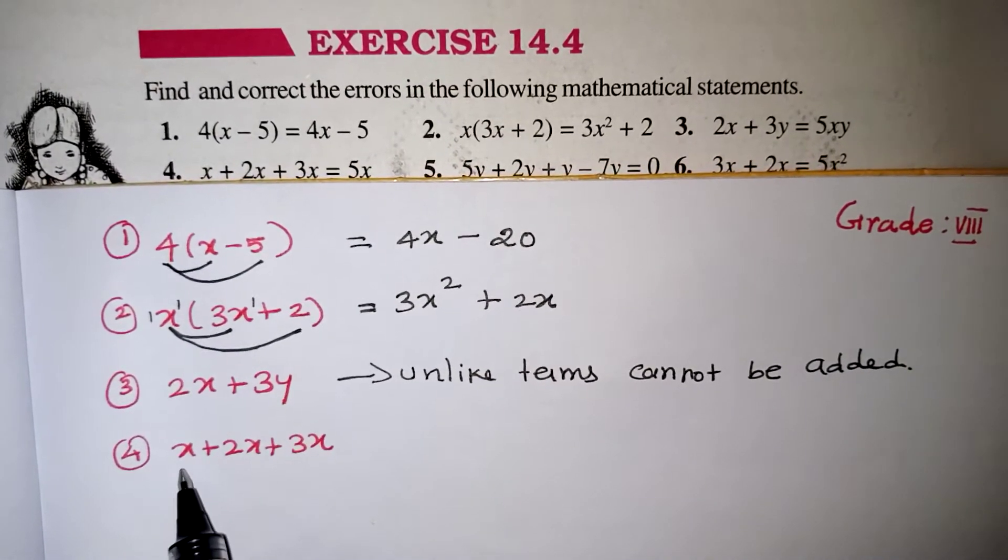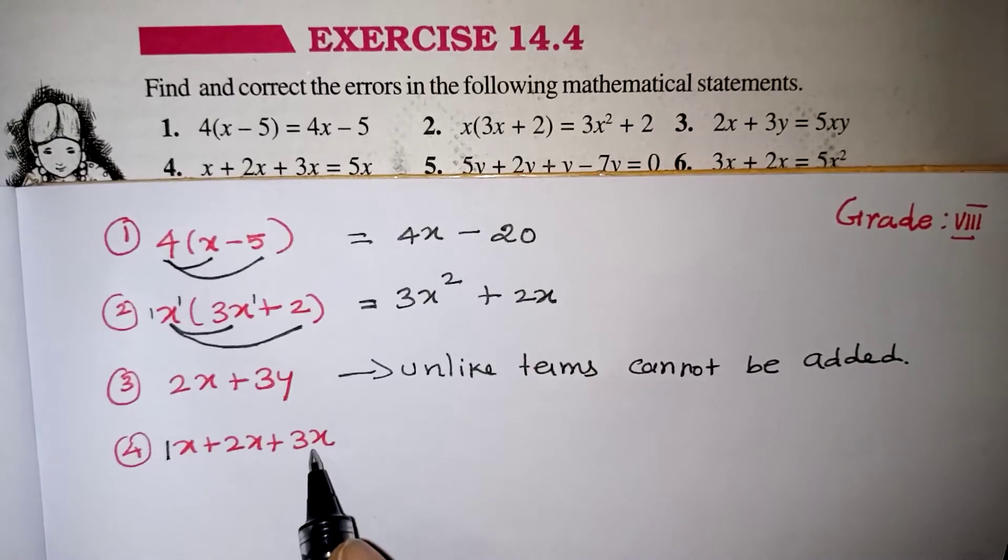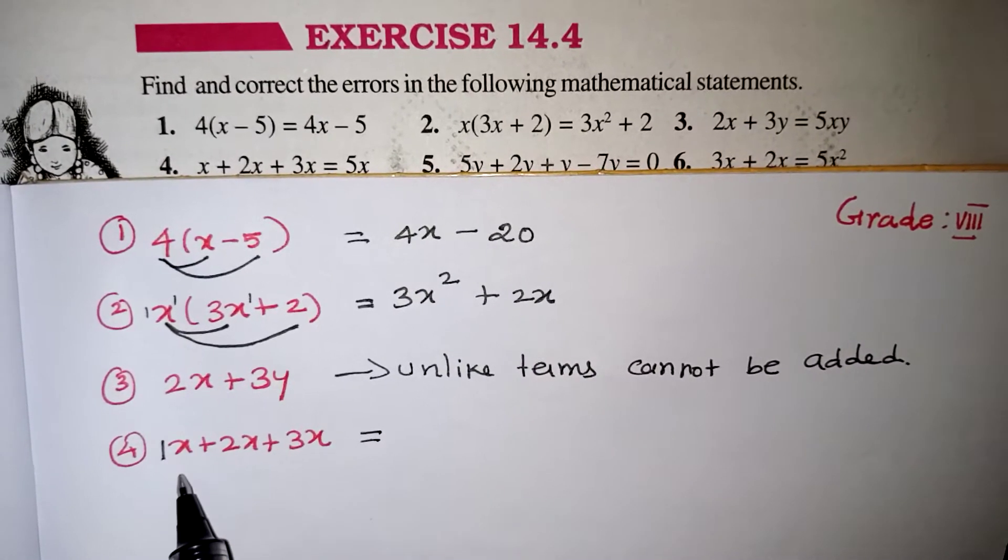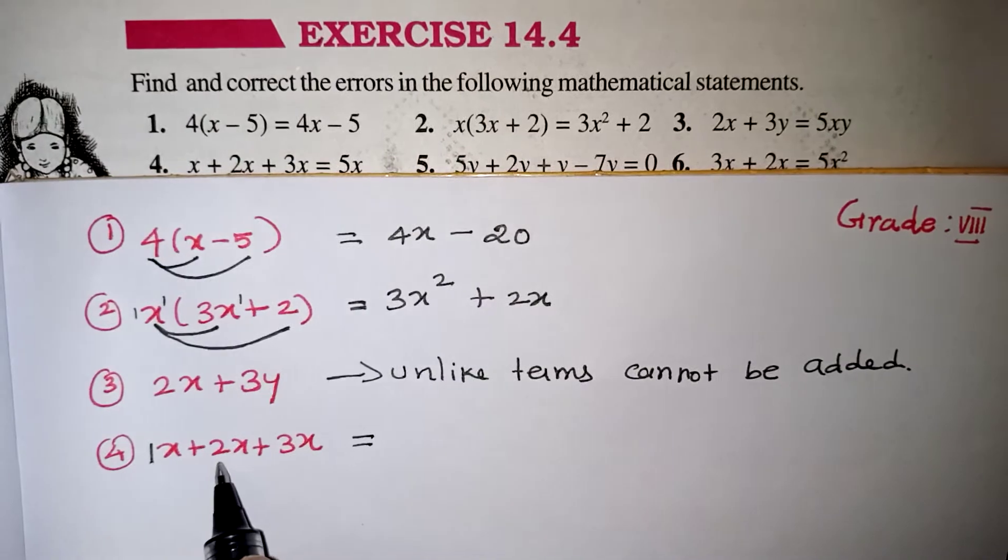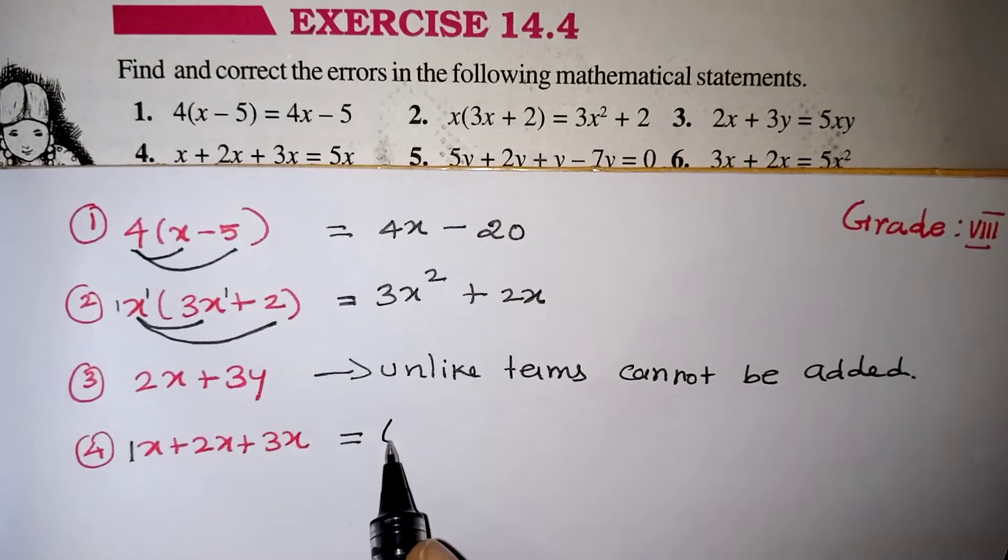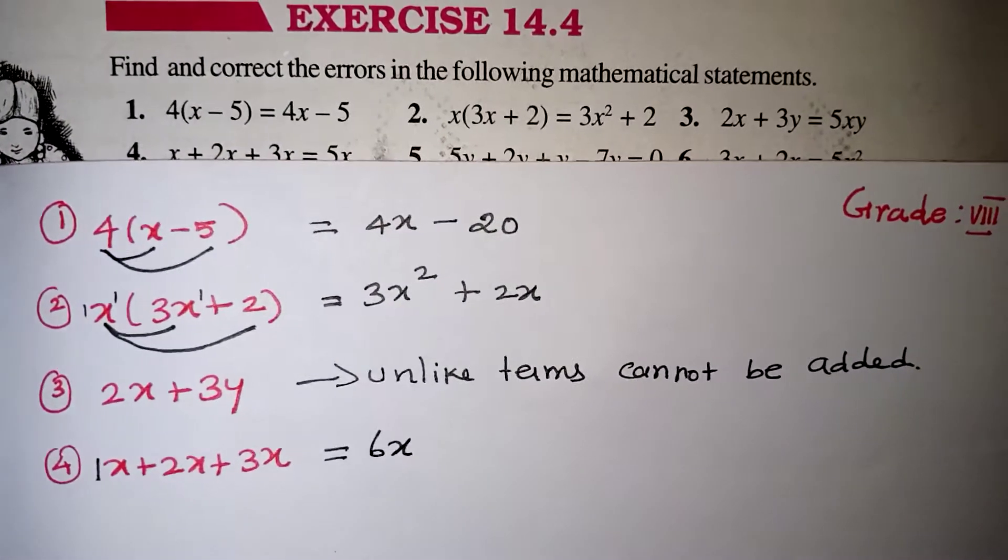So here 1x, 2x, 3x. All the terms are added. So 1x plus 2x is 3x. 3x plus 3x will give you 6x. That is your correct answer.